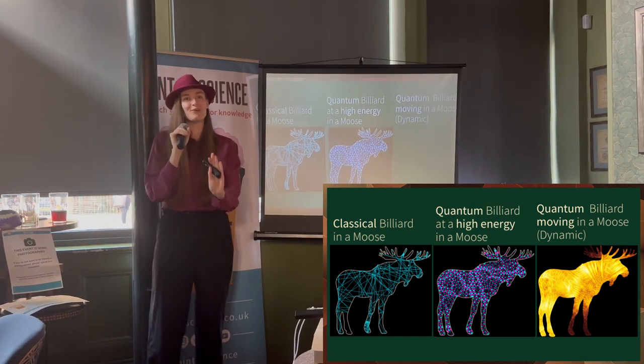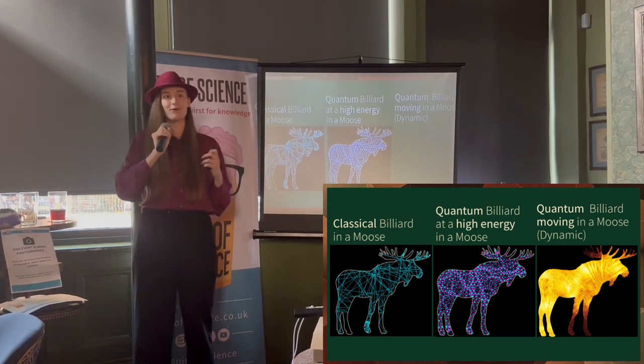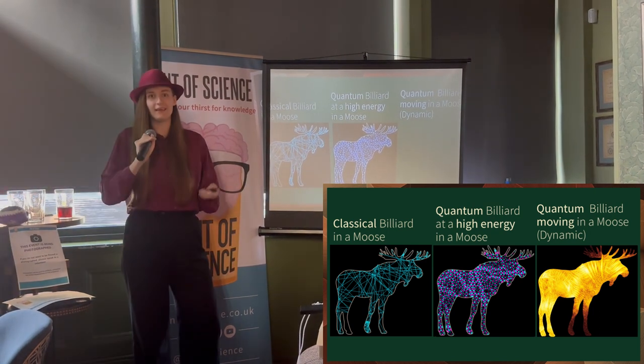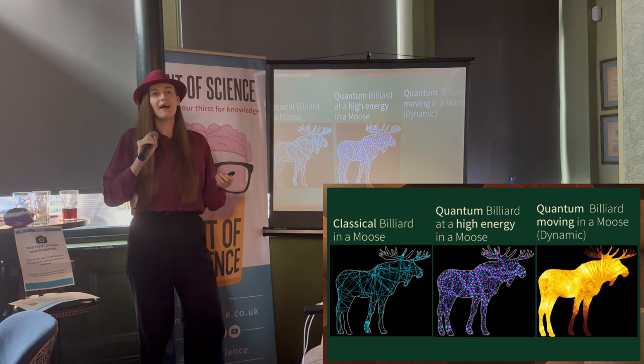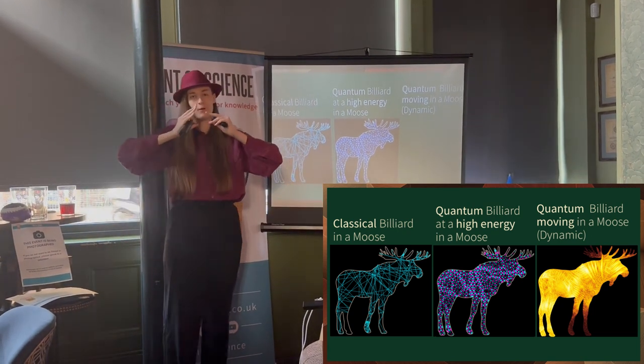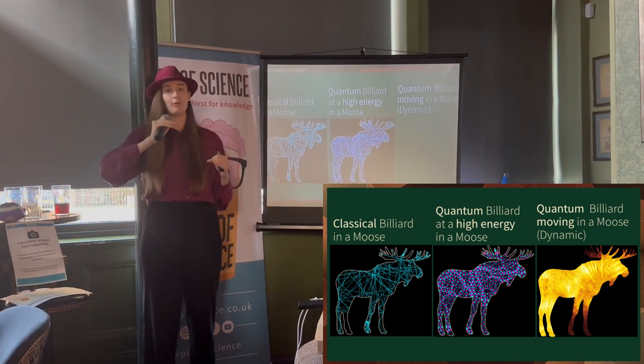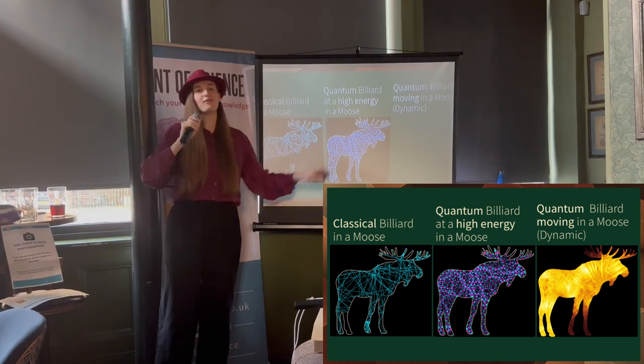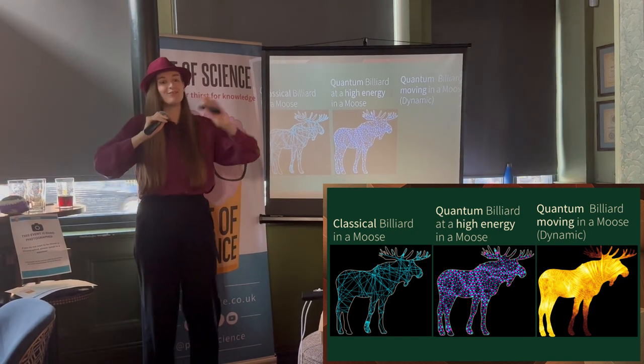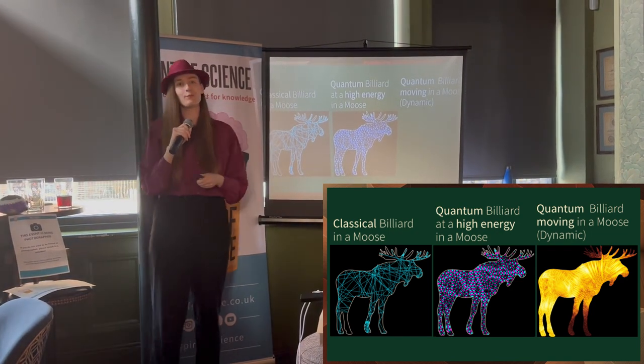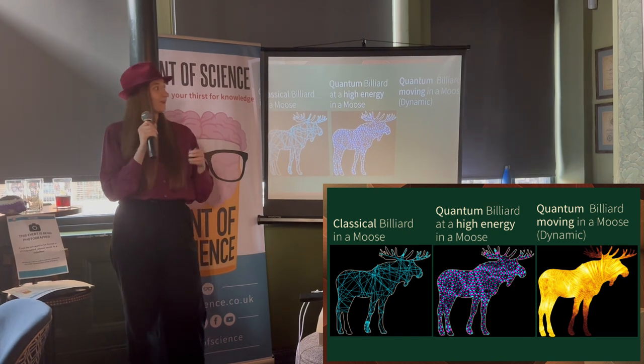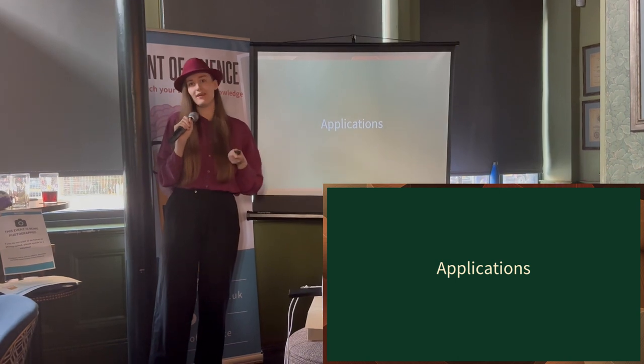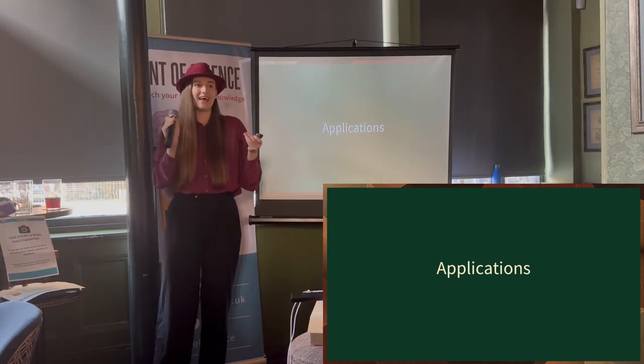So to summarize, we've looked at three different ways of looking at billiards. We've looked at classical billiards in a moose, what we expect to see in a pub, like every Canadian pub. We've seen quantum particle waves at different energies fill the moose. And we've seen a particle wave as it bounces around the moose, fill the moose. This is what we can do about quantum billiards.